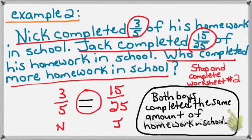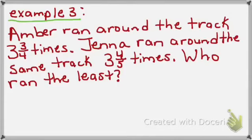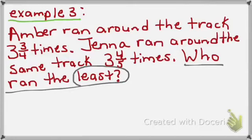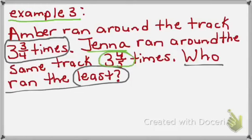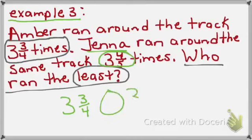Please stop the video and complete worksheet number 2 right now. Let's take a look at example 3. Amber ran around the track 3 and 3-4ths times. Jenna ran around the track 3 and 4-5ths times. Who ran the least? My question is: who ran the least? I know that Amber ran 3 and 3-4ths times, and Jenna ran 3 and 4-5ths times. I'm going to take Amber's amount, 3 and 3-4ths, and compare that to Jenna's amount, 3 and 4-5ths, looking for which one is the least.